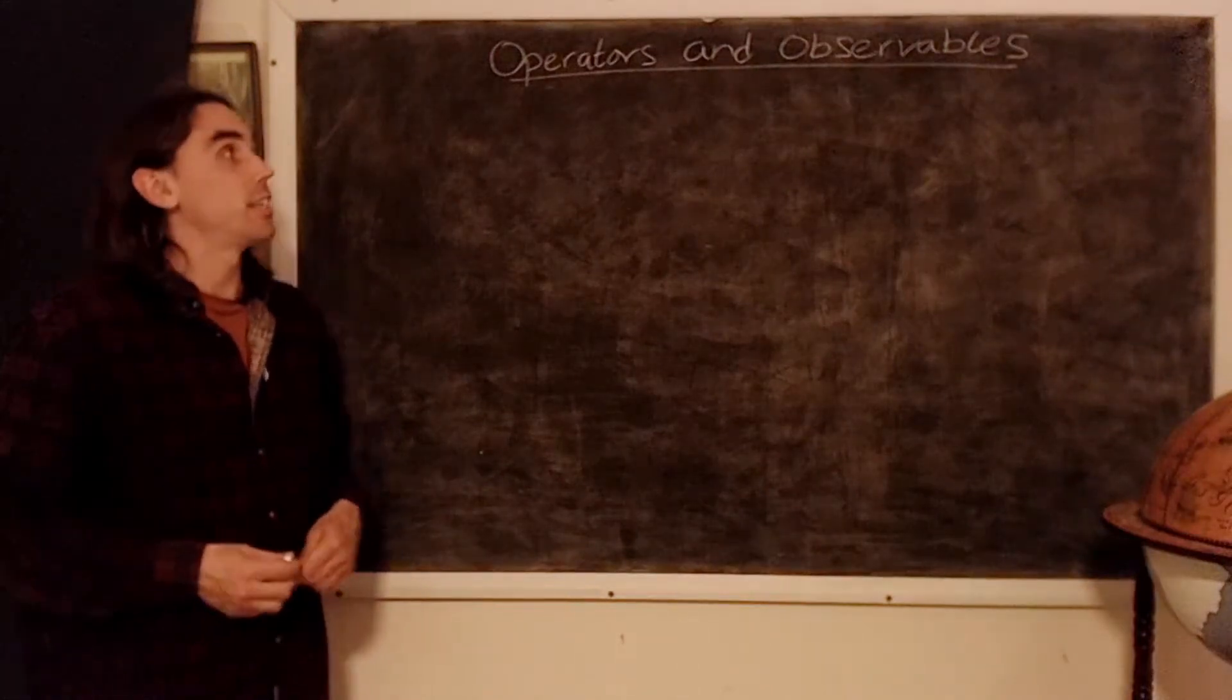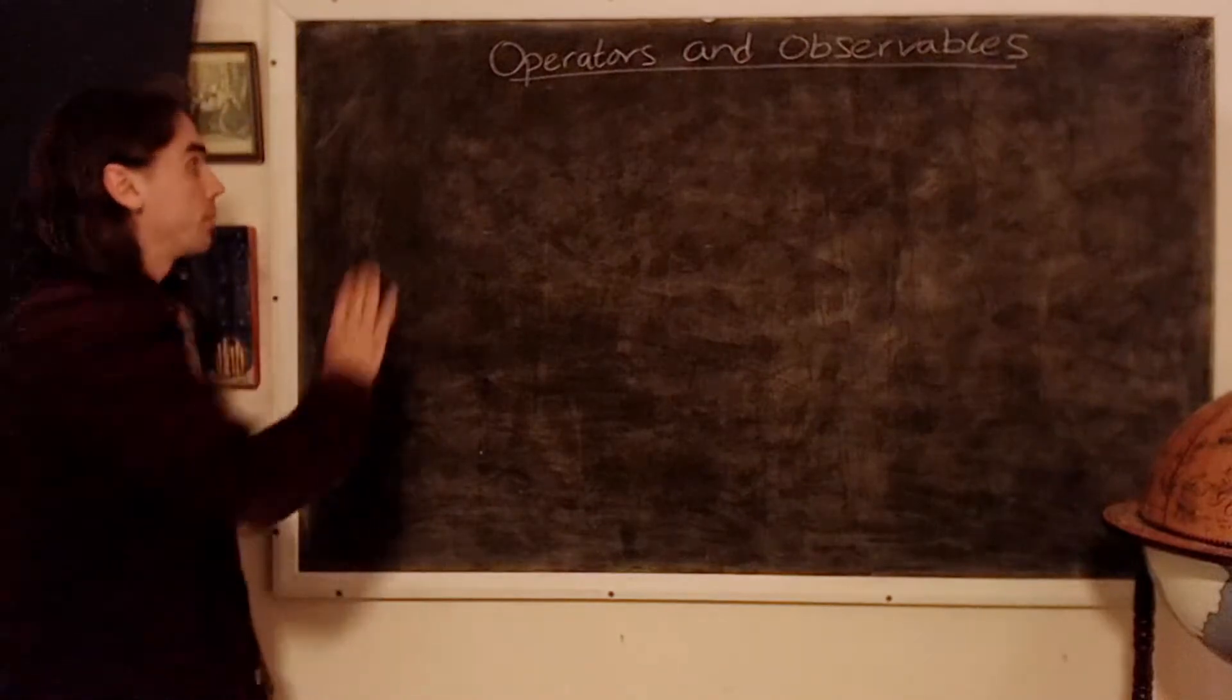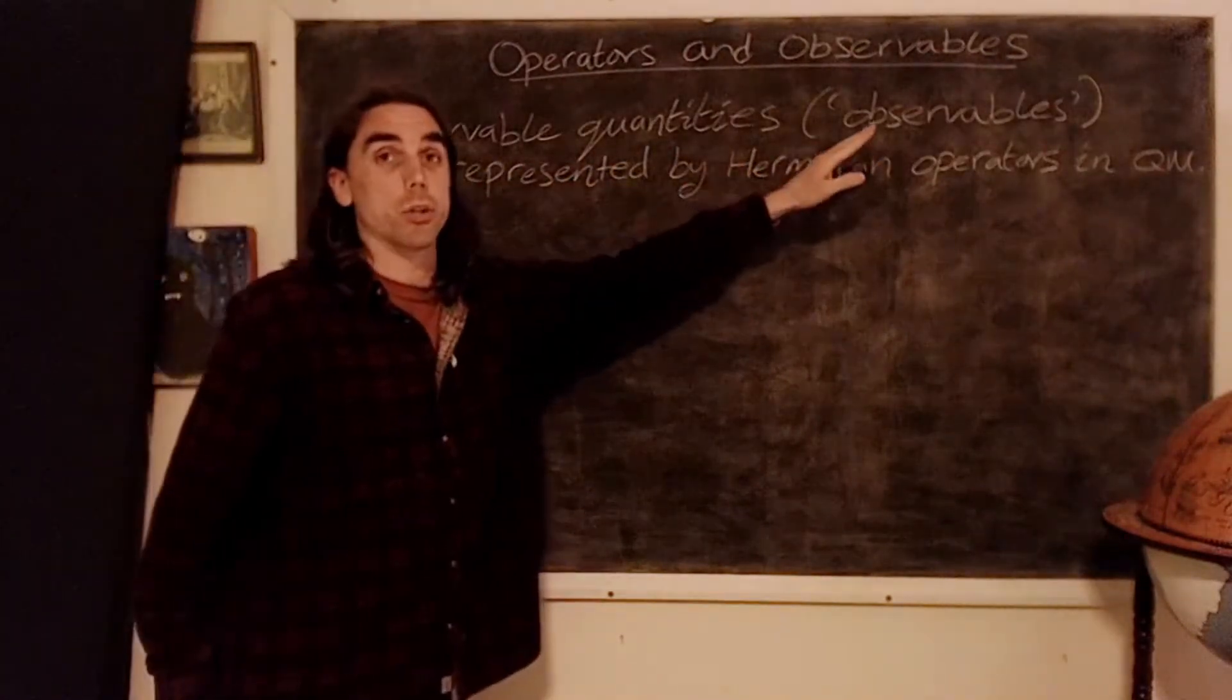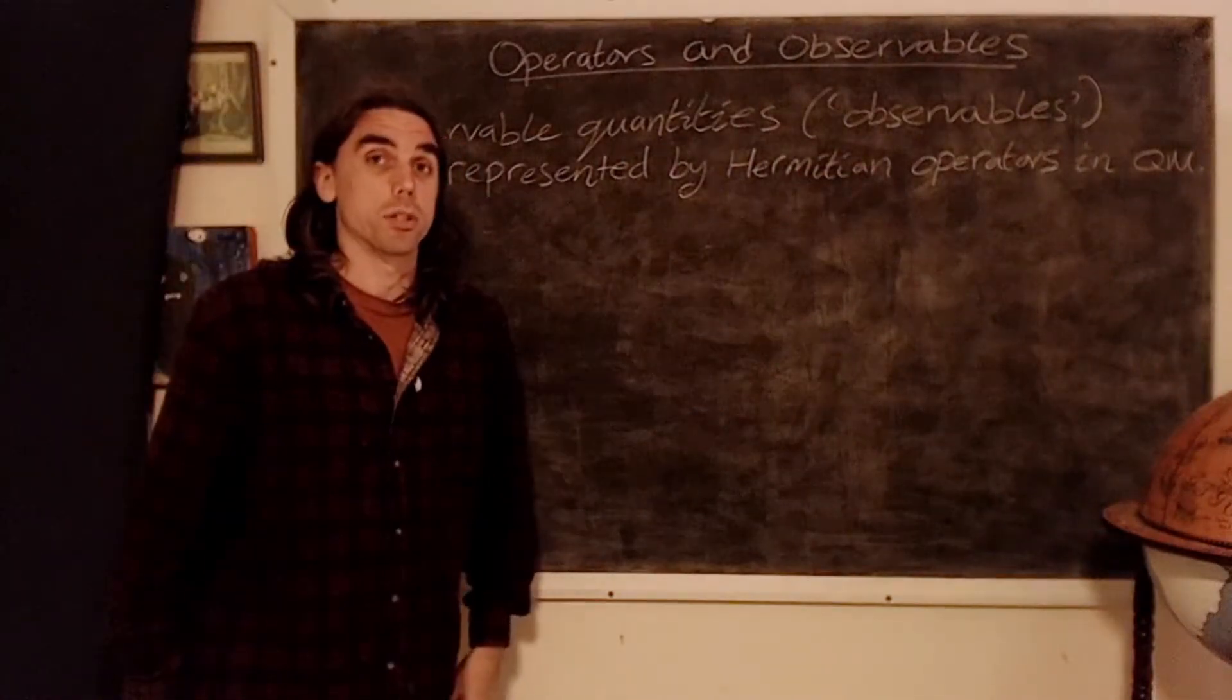Hello. In this video we're going to take a look at operators and observables. In particular we have the following. Observable quantities, which we usually abbreviate to observables, are represented by Hermitian operators in quantum mechanics.